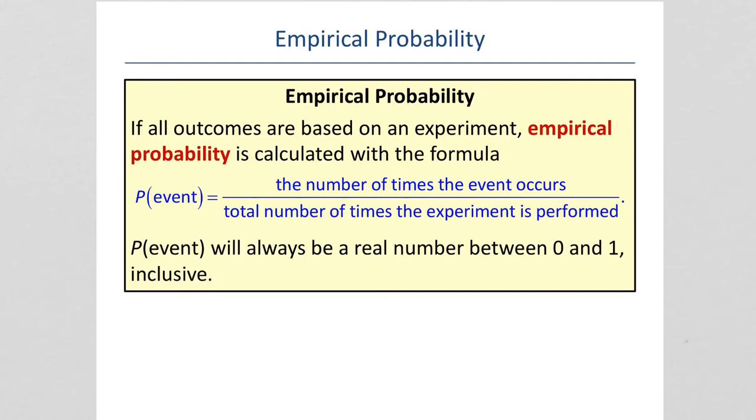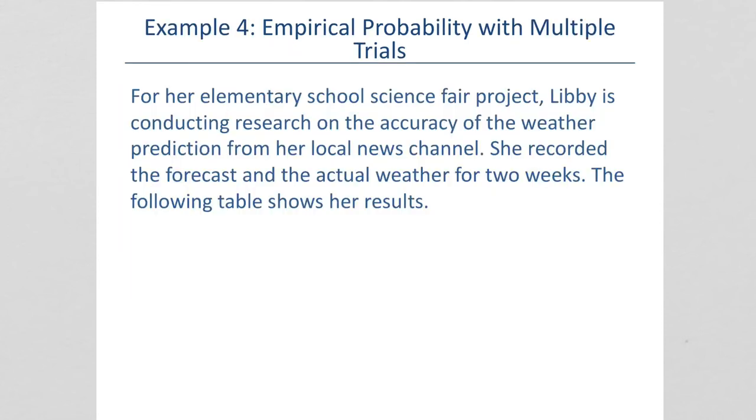So, the first one, classical probability, that's sometimes called theoretical probability, is based on theory. It's what you expect to happen. Empirical is based on something that you've, an experiment, or something that you've actually been performed to try out.